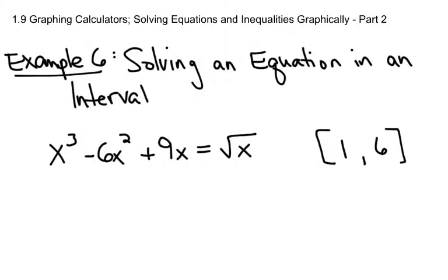Sometimes in a problem, particularly in this textbook, they'll tell you to look for a solution on a certain interval. If they do that, what they're really telling you to do is to change the window setting on your calculator. So in order to solve x cubed minus 6x squared plus 9x equals the square root of x — it looks really nasty, but it really isn't if we use the graphing calculator to help us.